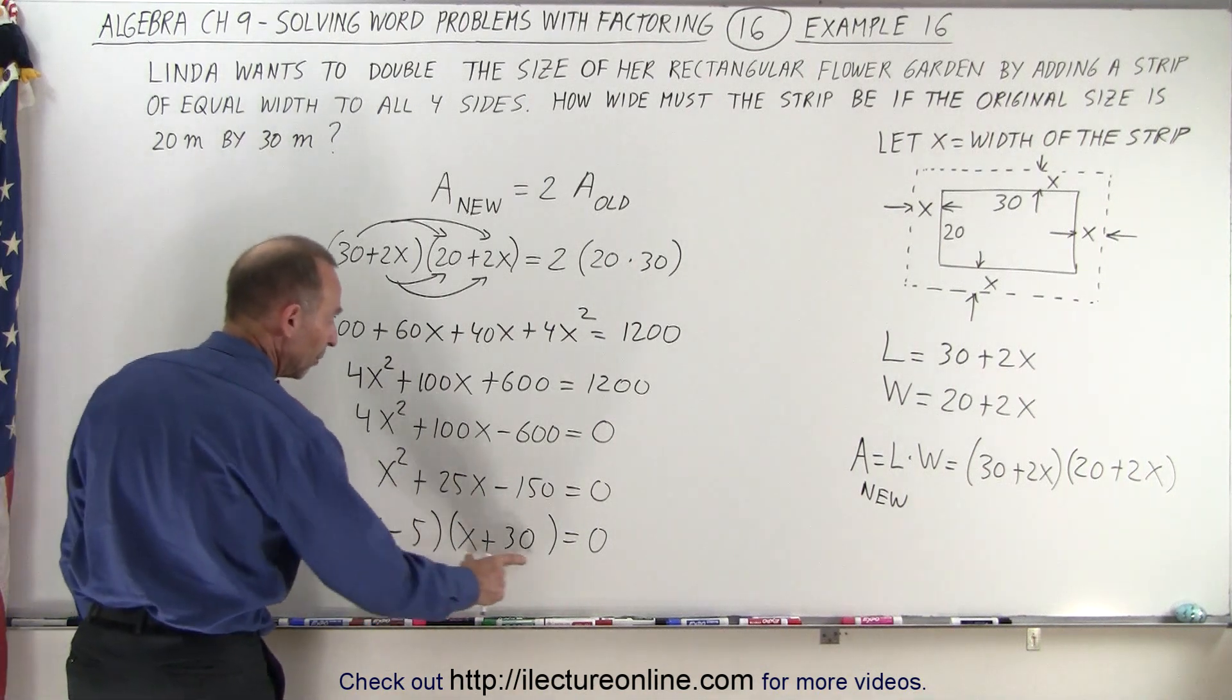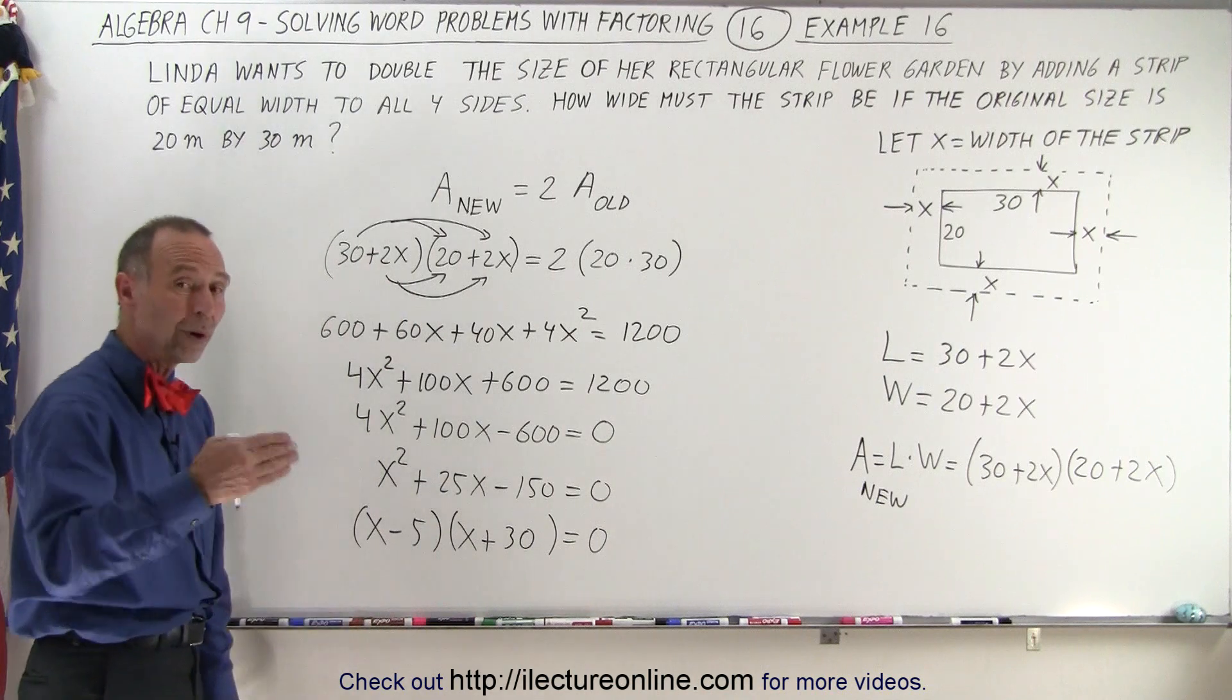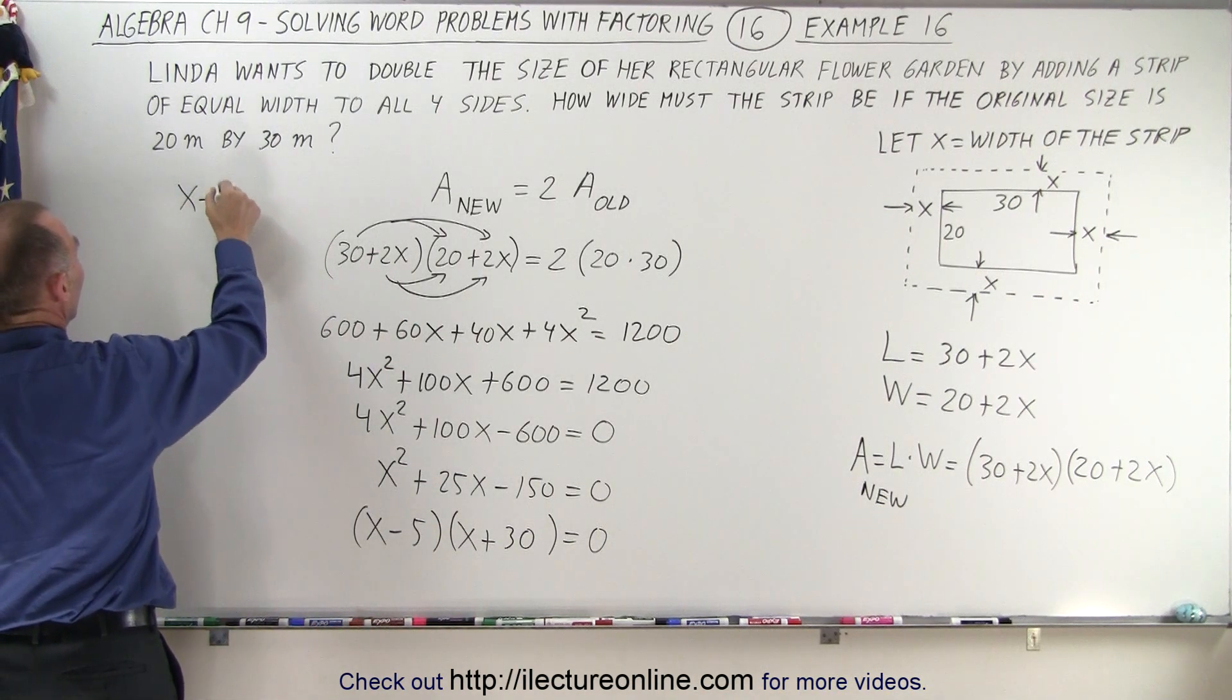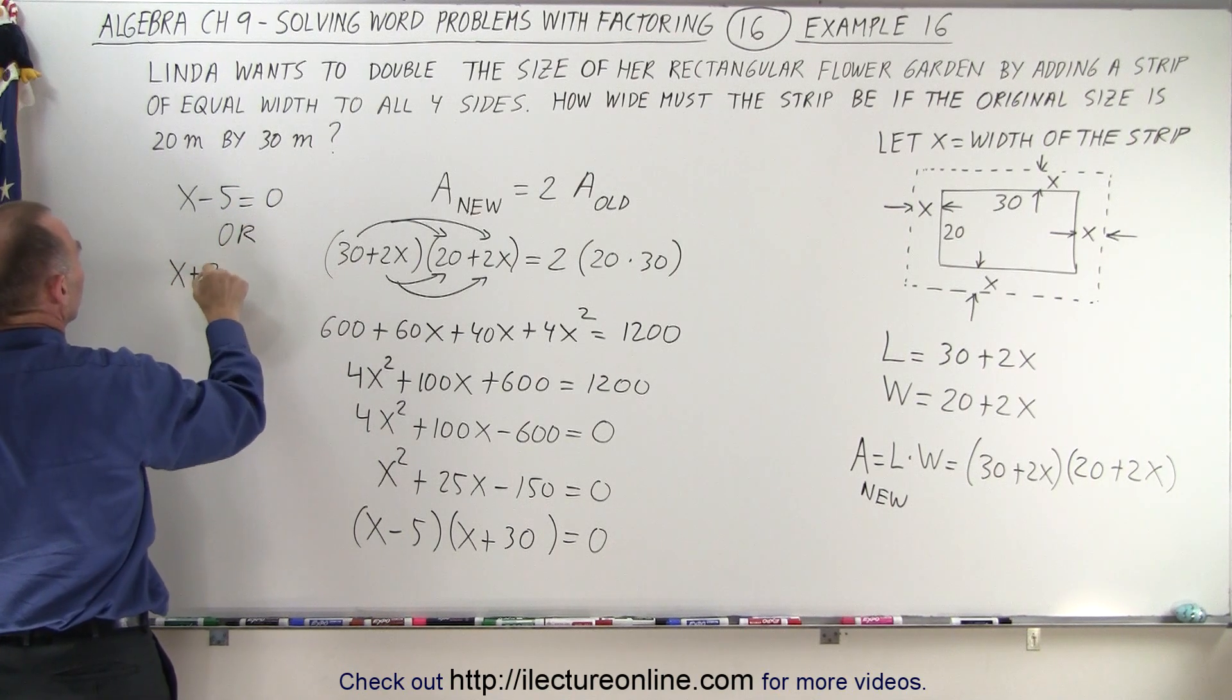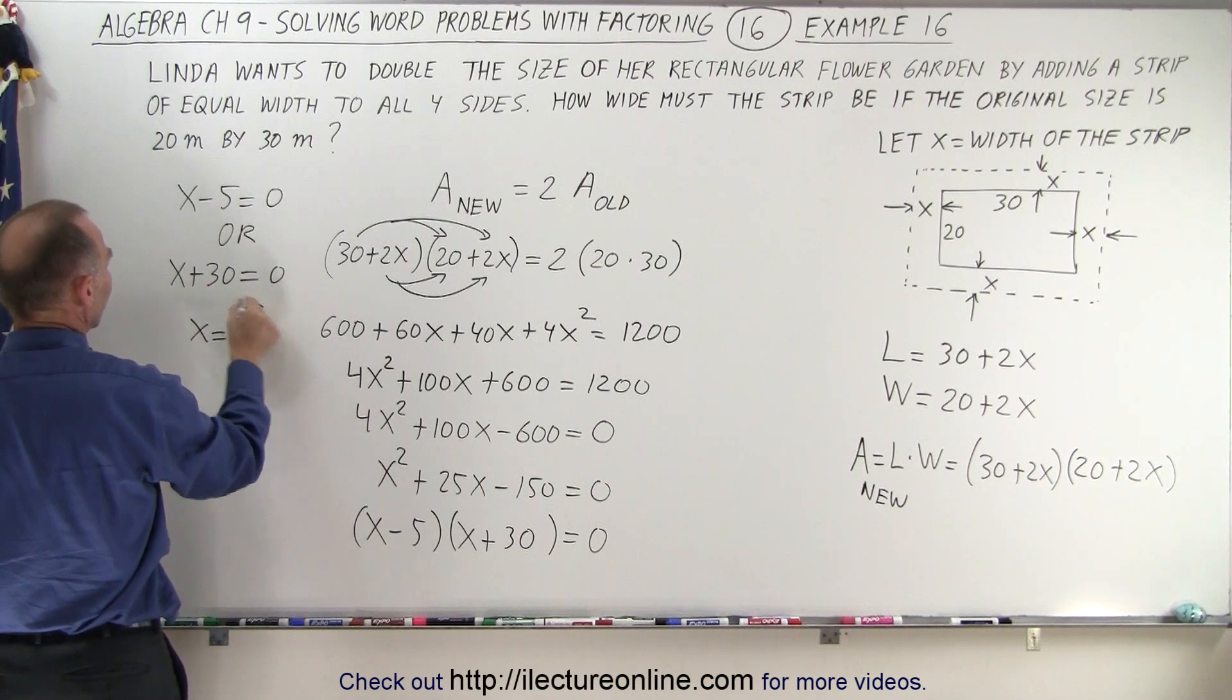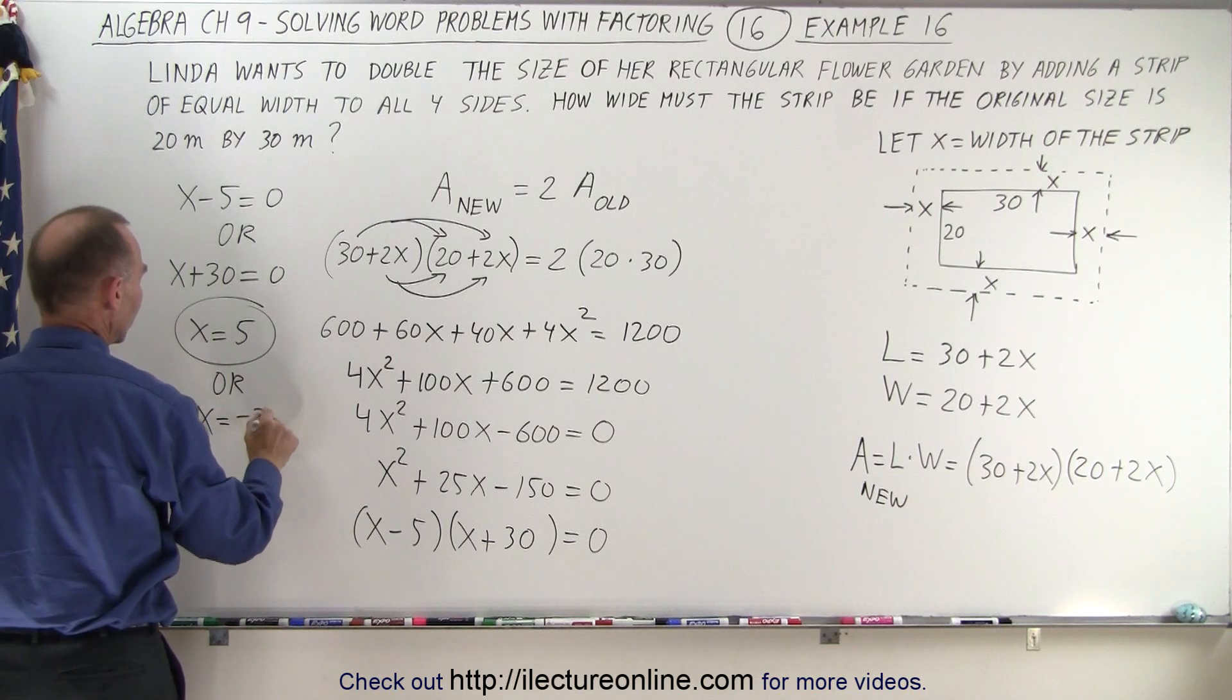So when I have two binomials multiplied together that equals zero, that means either one or the other is equal to zero, which means that x minus 5 must equal zero or x plus 30 must equal zero. In the first case we have x equals 5. And in the second case we have x equals negative 30.